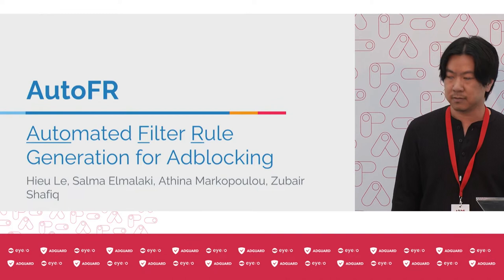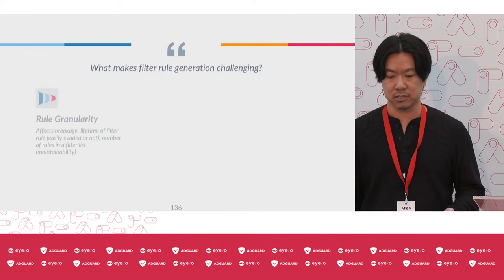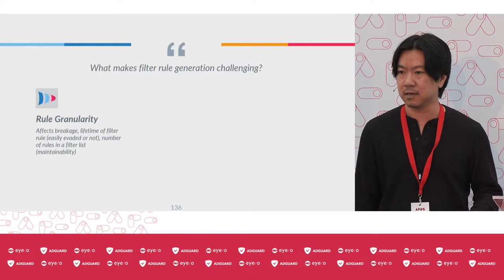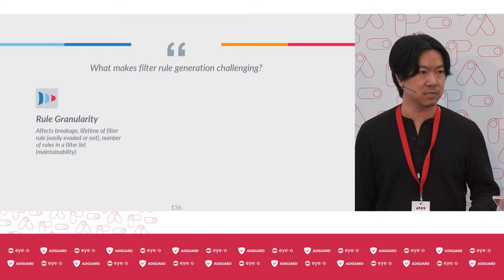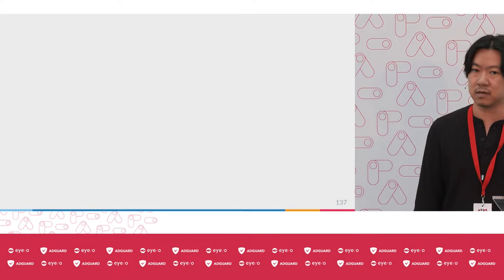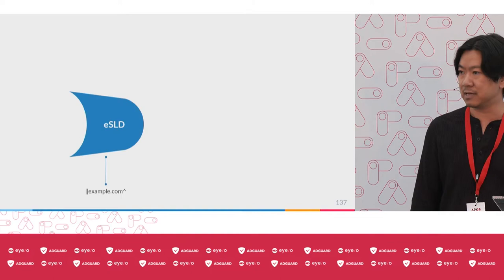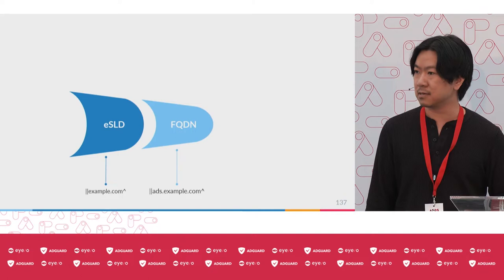What makes filter rule generation challenging? The first challenge is really learning the correct rule granularity, because this can affect the potential breakage that the rule can cause, and the lifetime of the filter rule as well — whether it's easily evaded or not. It can also affect the number of rules in a filter list. I'll illustrate this challenge by focusing on URL-based rules. For example, we can have ESLD rules, or more specific rules like FQDNs, or ones with paths that can target particular JavaScript resources.